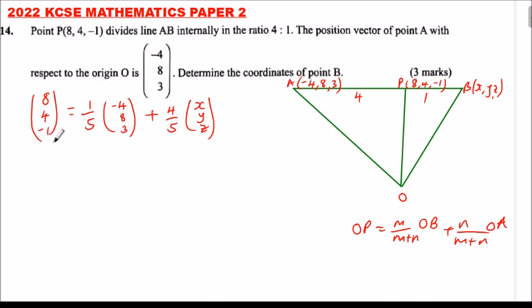We multiply throughout by 5. When you multiply 8 by 5 you get 40, 4 by 5 you get 20, 5 multiplied by minus 1 that will give us minus 5.